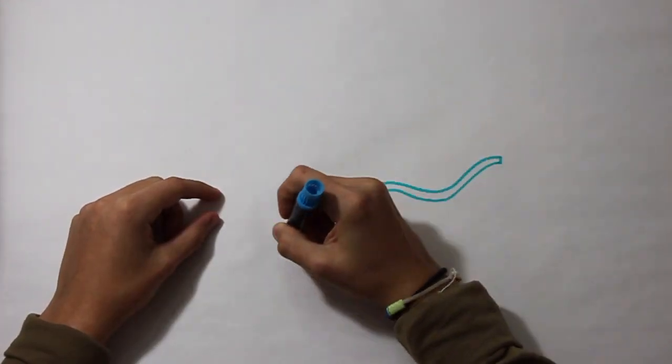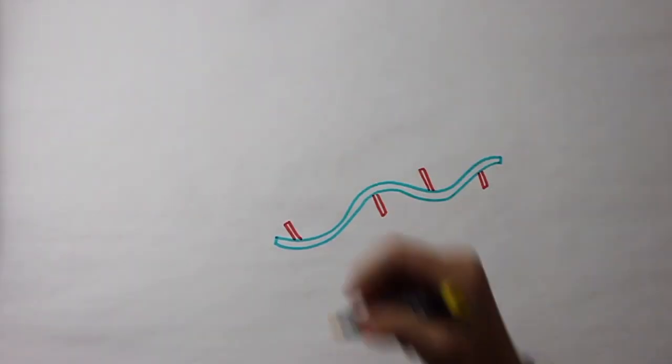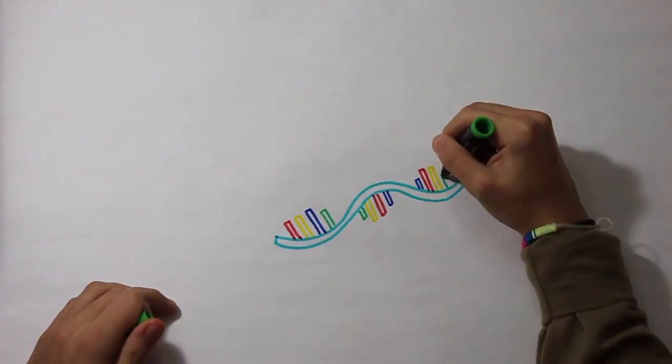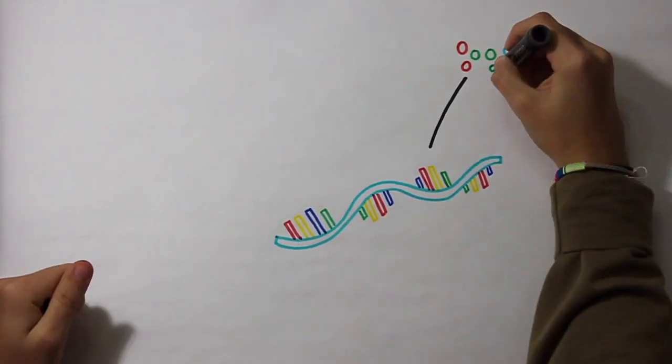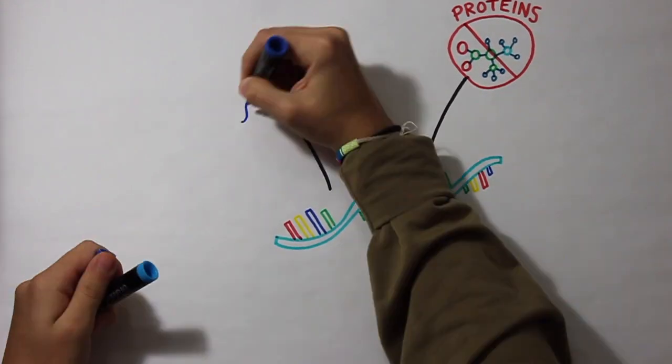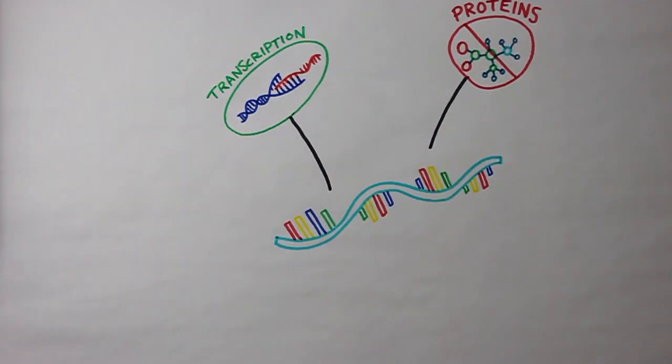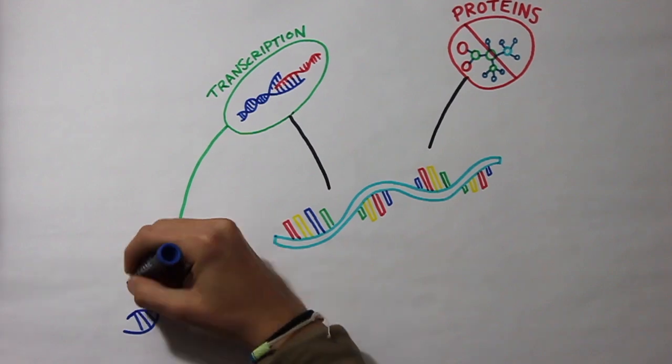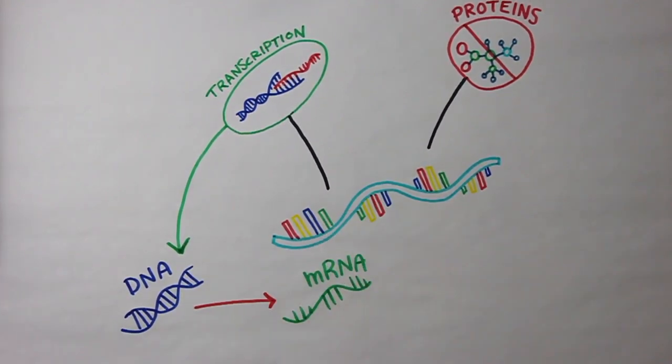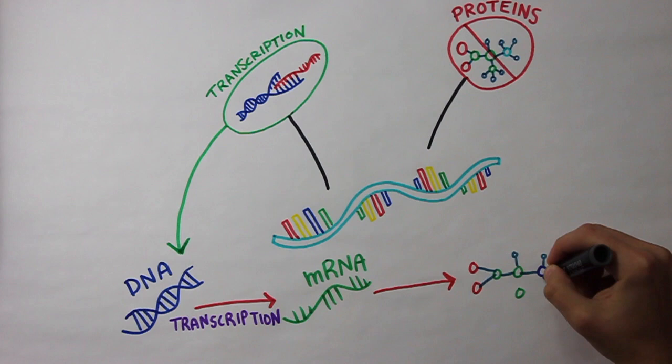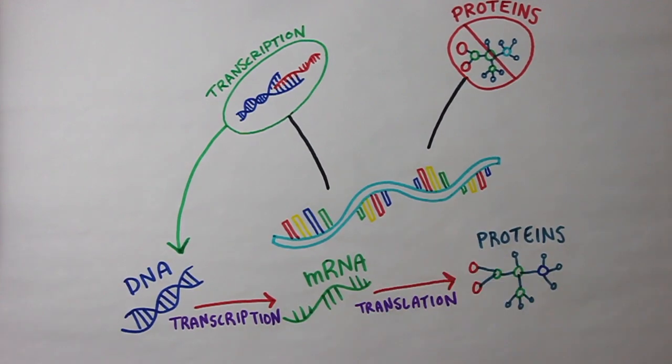Non-coding RNAs are small or large RNA molecules that do not create proteins, but are involved in transcription. Transcription is the process of copying DNA into messenger RNA, which is then used to create proteins through a process called translation.